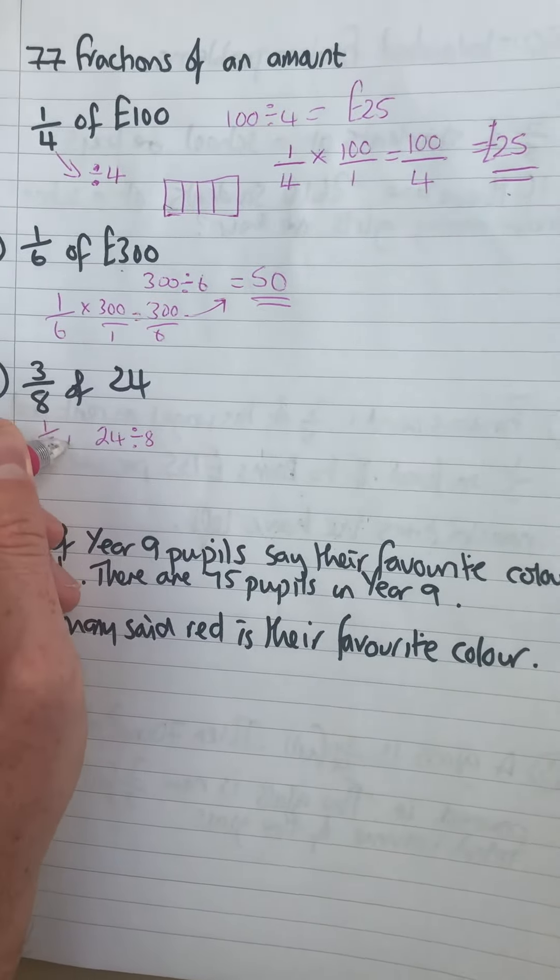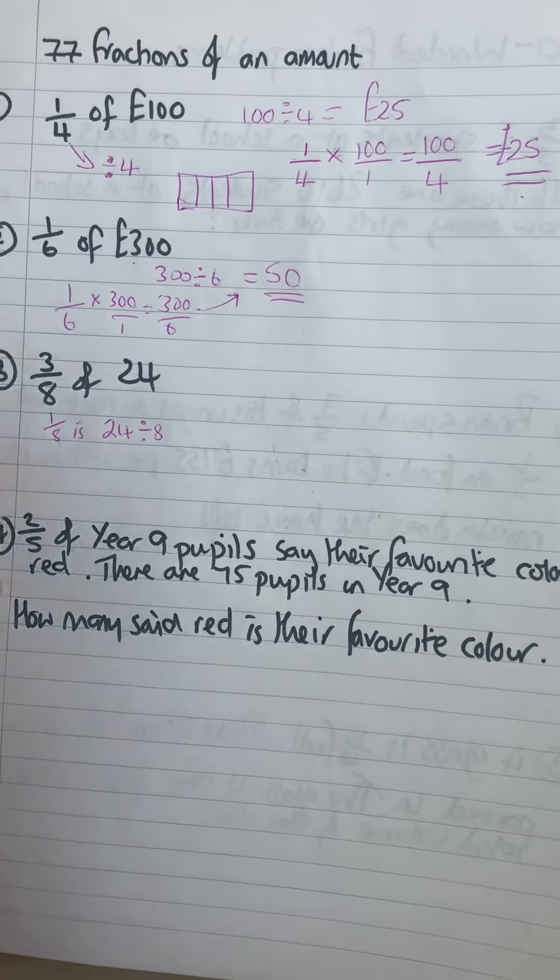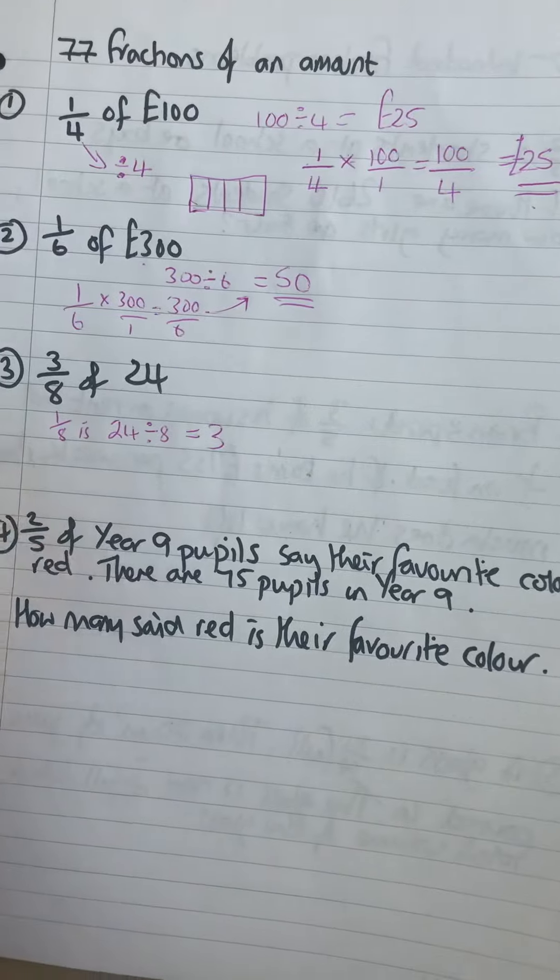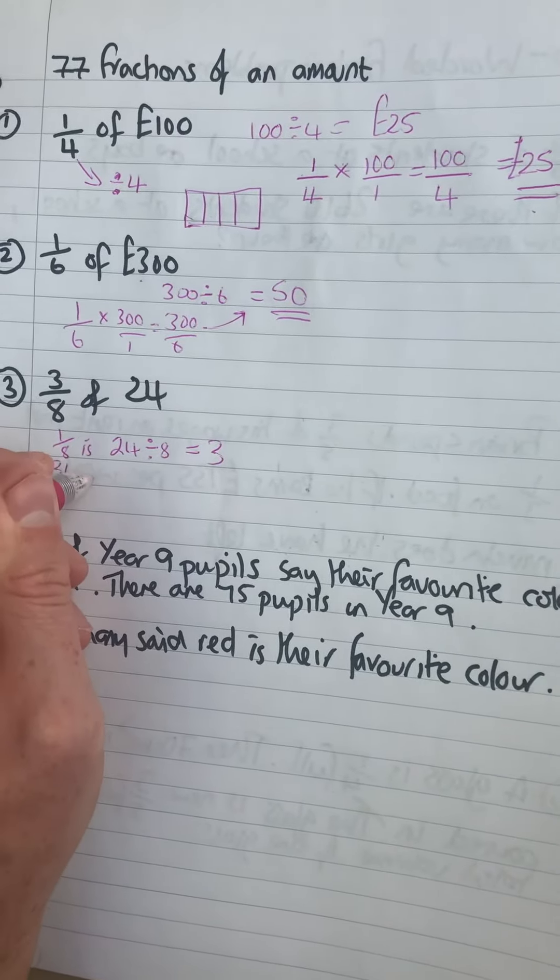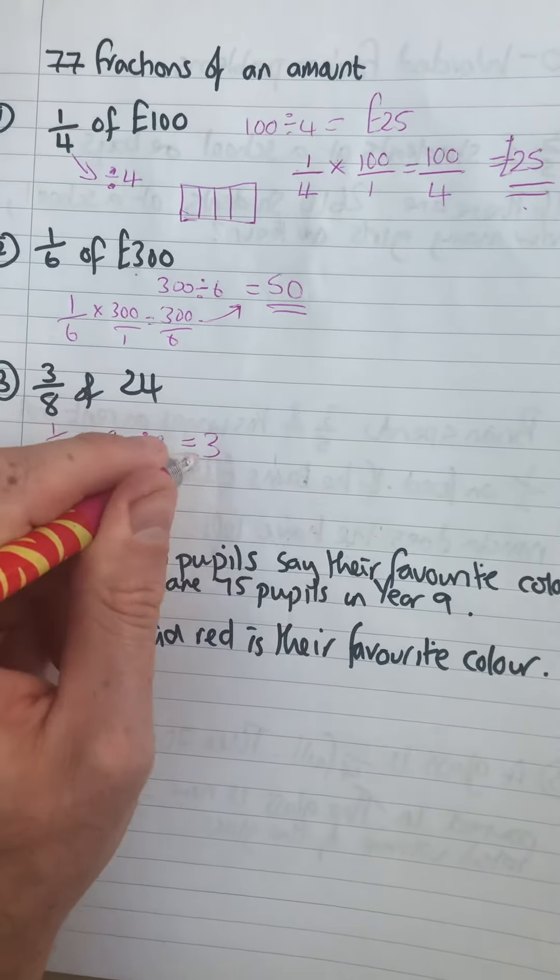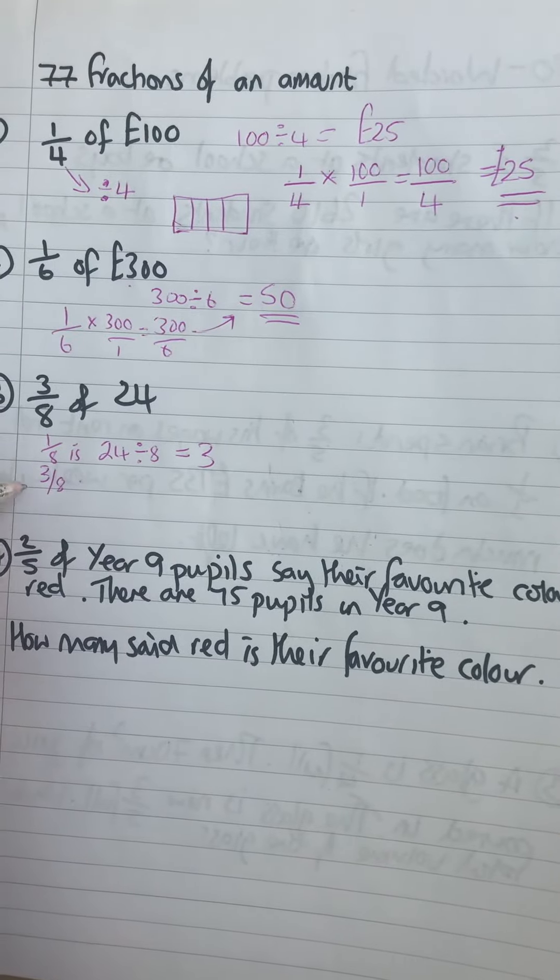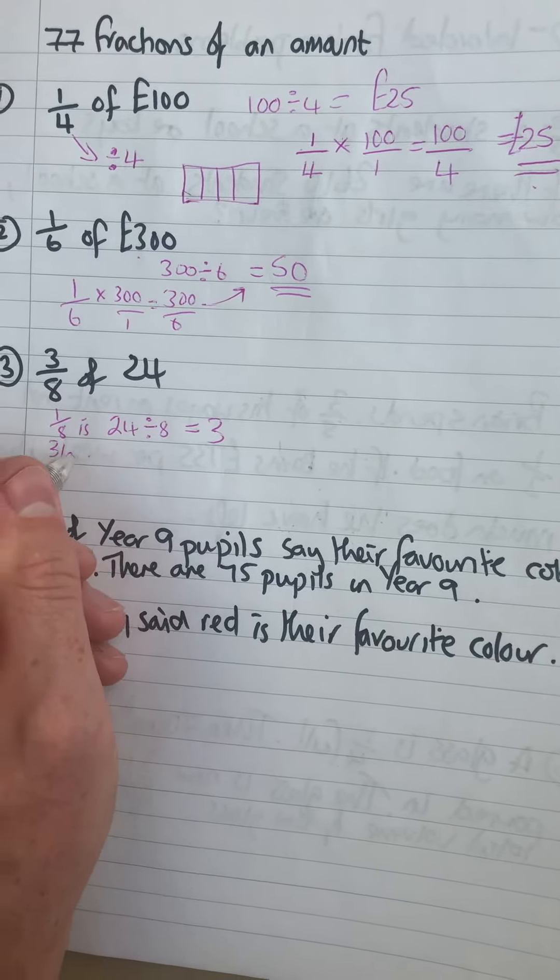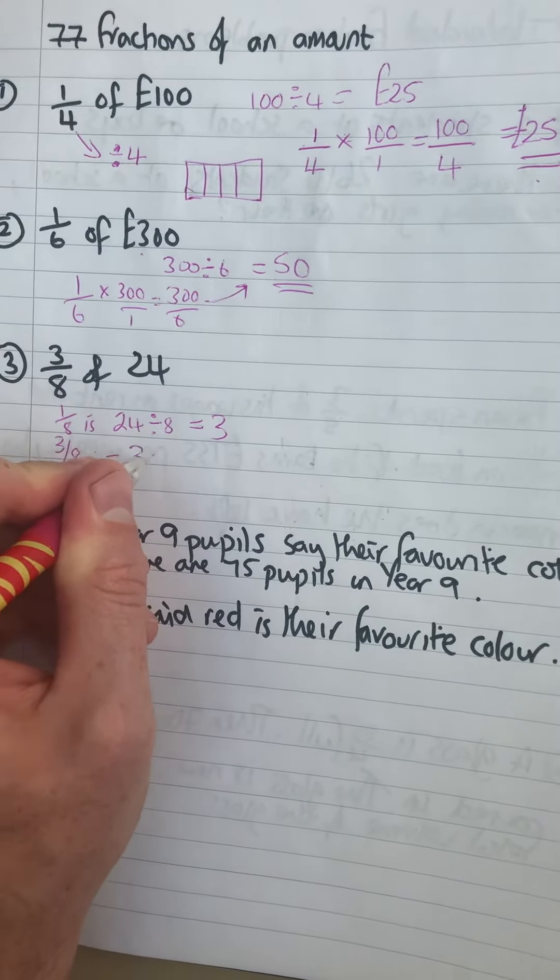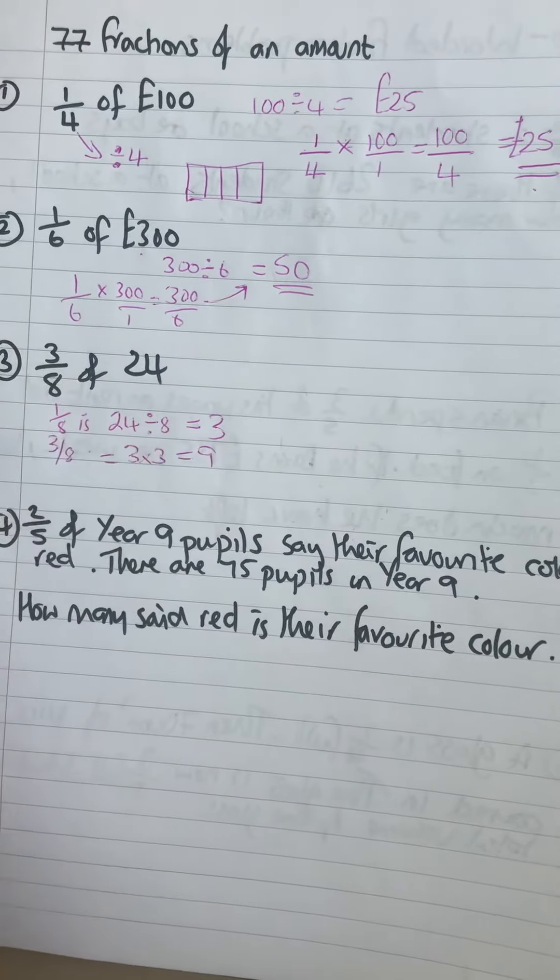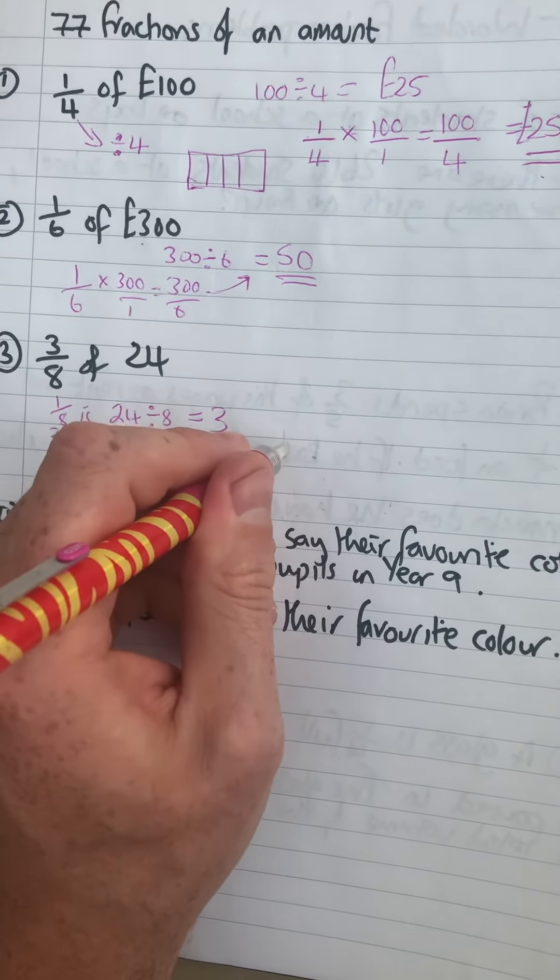By eight, which is three. So therefore three eighths would be three lots of that one eighth because one eighth times three is three eighths. So that's the same as three times three which is nine. So three eighths of 24 is nine.